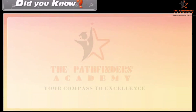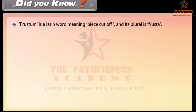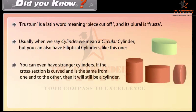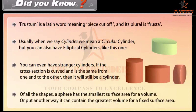Did you know — frustum is a Latin word meaning 'piece cut off' and its plural is frusta. Usually when we say cylinder we mean a circular cylinder, but you can also have elliptical cylinders. You can even have stranger cylinders if the cross-section is curved and the same from one end to the other. Of all shapes, a sphere has the smallest surface area for a given volume — or put another way, it can contain the greatest volume for a fixed surface area.